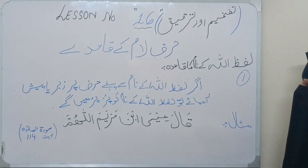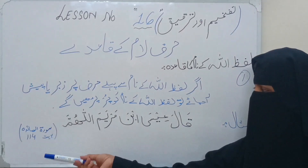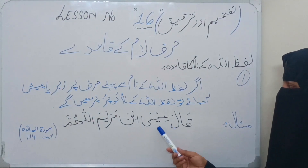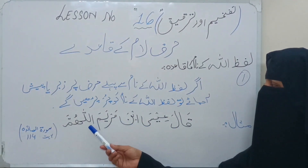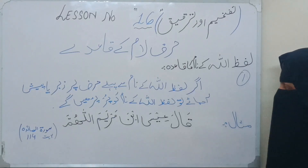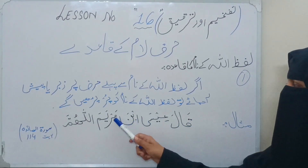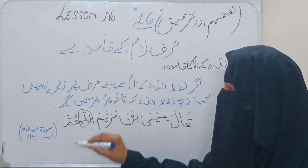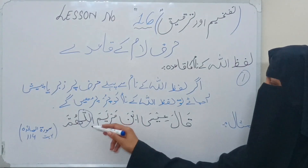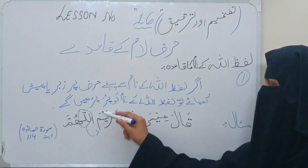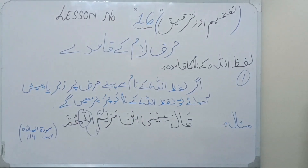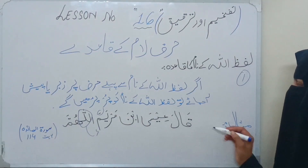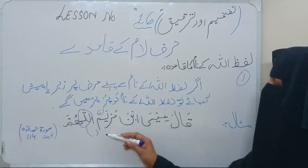So, example: سورة مائدہ verse number 114 میں ہے — قَالَ عِيسَى ابْنُ مَرْيَمَ اللَّهُمَّ۔ یہاں پر اللہ سبحانہ وتعالیٰ کے نام سے پہلے لیٹر میم ہے، میم کے اوپر زبر یعنی فتحہ ہے۔ اس کنڈیشن میں ہم اللہ کے نام کو پور یعنی موٹا کر کے پڑھیں گے — قَالَ عِيسَى ابْنُ مَرْيَمَ اللَّهُمَّ۔